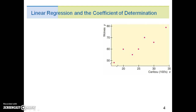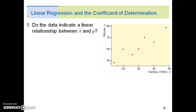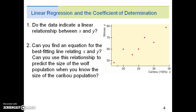Here is our linear regression scatter diagram. Do the data indicate a linear relationship between x and y? Can you find an equation for the best fitting line relating x and y? Can you use this relationship to predict the size of the wolf population when you know the size of the caribou population?